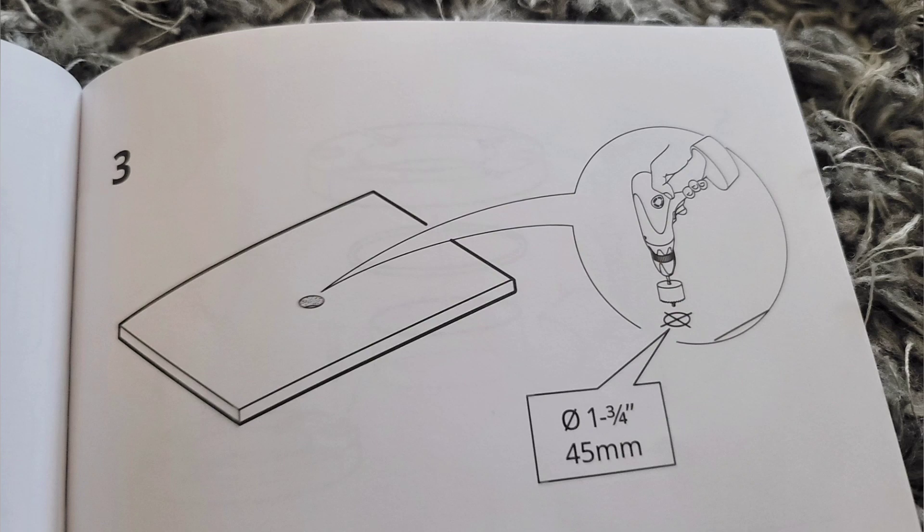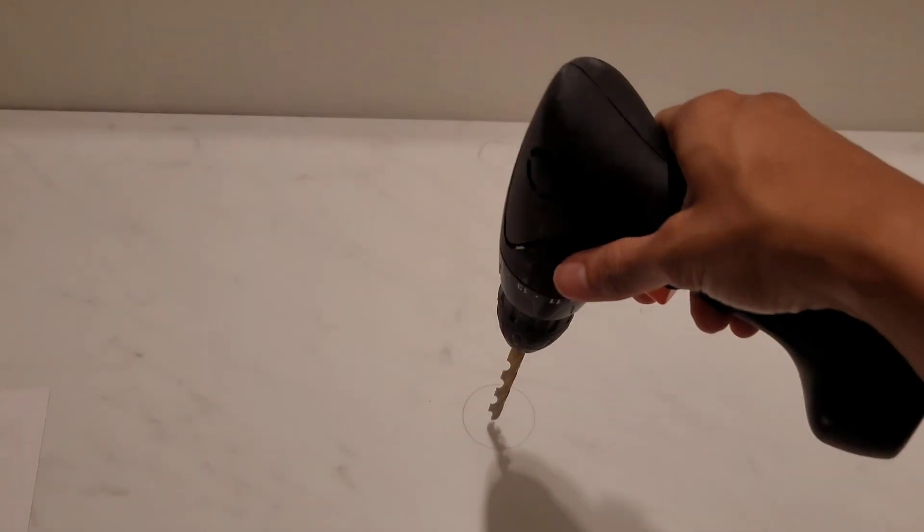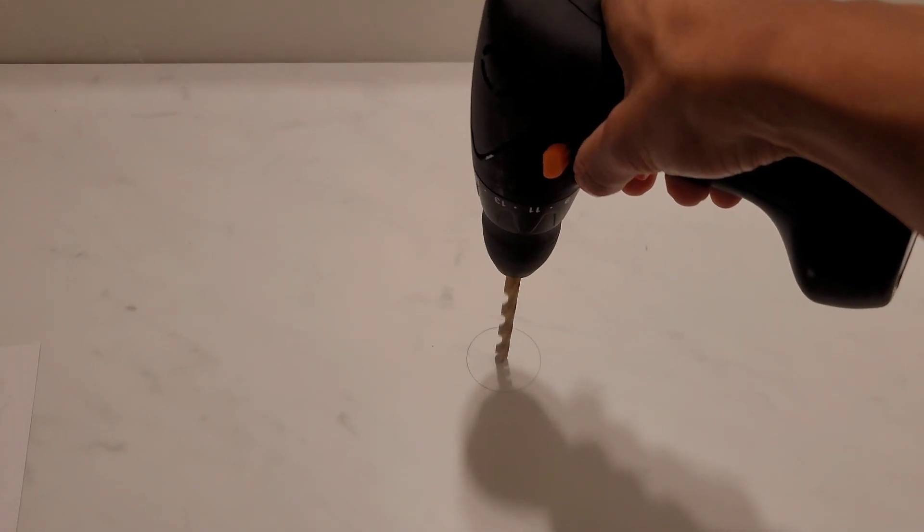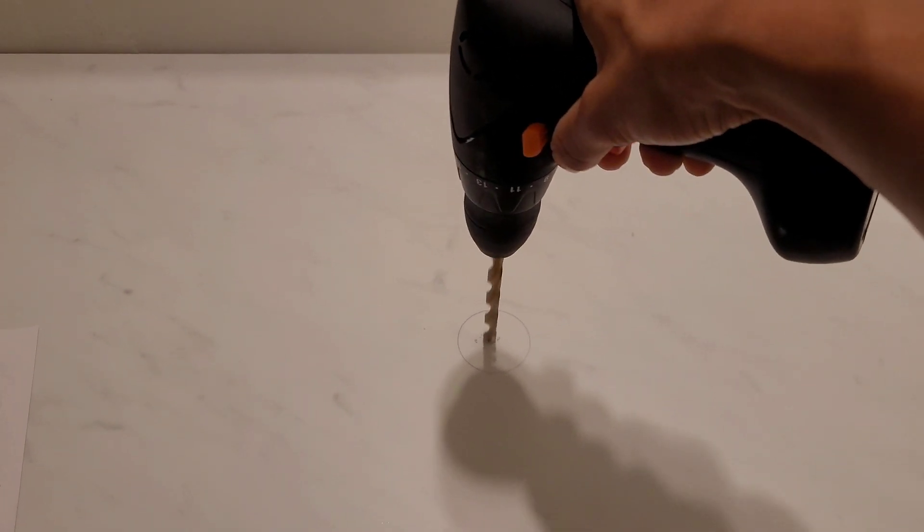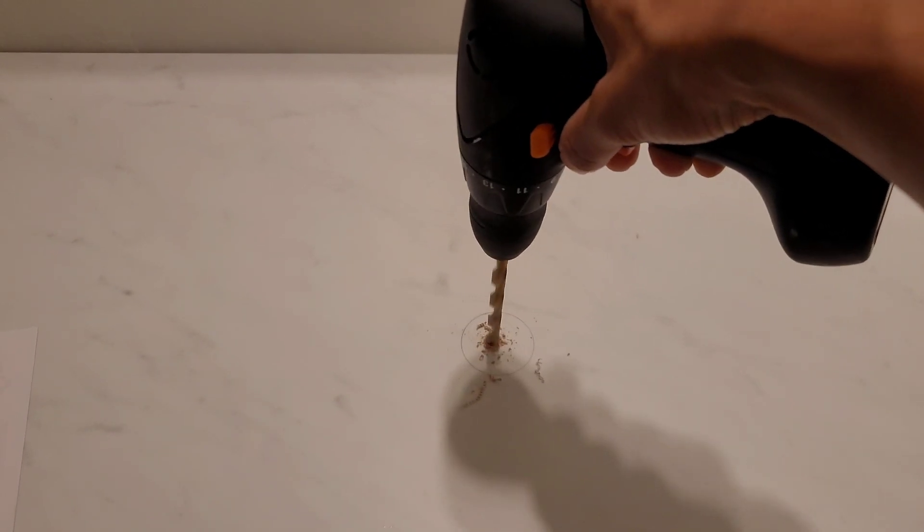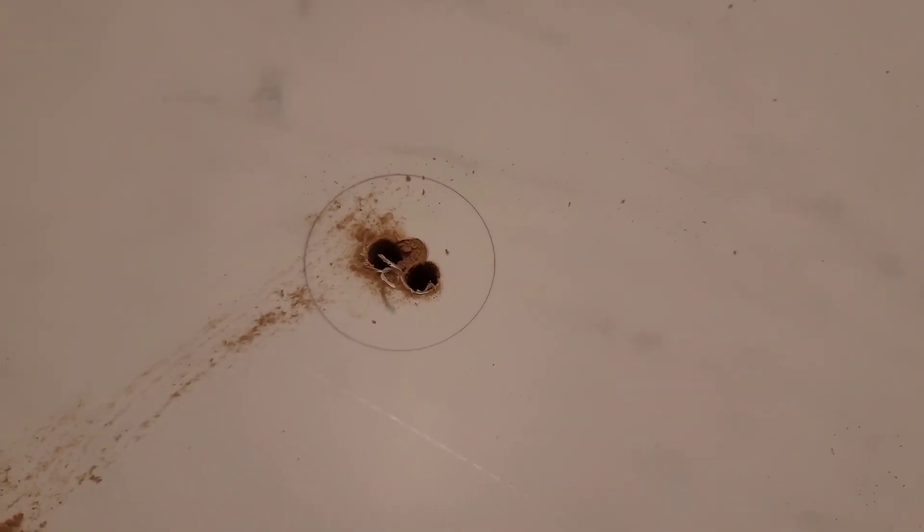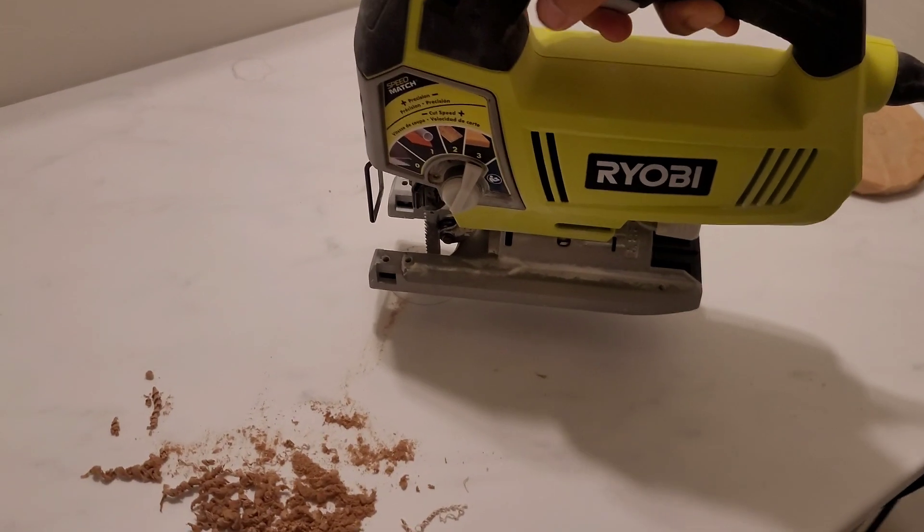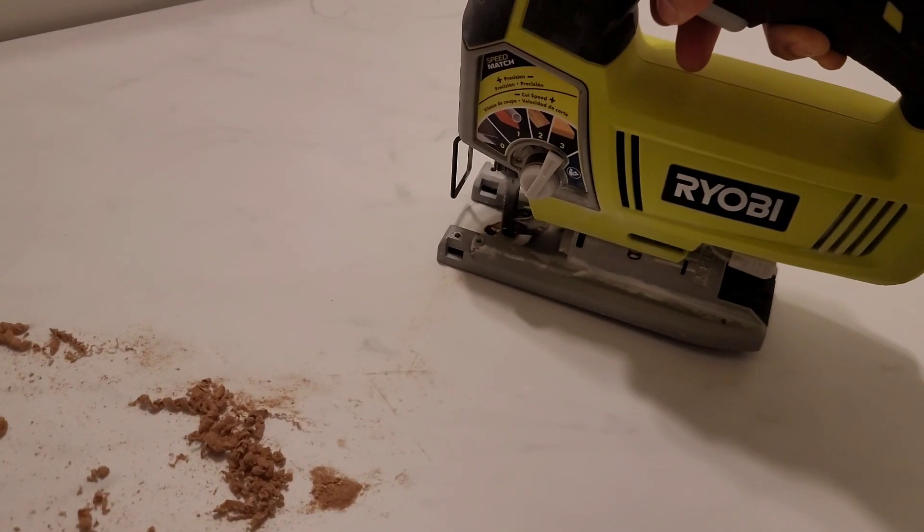Step three is just to now carve out that hole. And you can use a hole dozer. I didn't have one, so I just used my drill and my jigsaw to somehow make a hole out of this and just carve it out. It wasn't easy. I definitely recommend you just get a hole dozer.